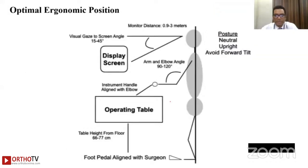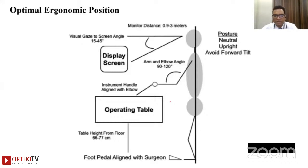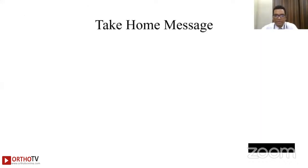Two points about ergonomics during surgery: ensure your posture is straight. For endoscopic surgeries, the screen should be around 3 meters away at 15 to 45 degrees angle. When using a microscope, keep your head straight and avoid bending. The elbow angle should be around 90 to 120 degrees while operating. The operating table — and therefore patient position — should be at the level of the surgeon's umbilicus, with a recommended table height of approximately 66 to 77 centimeters. A footstool can be used to change leg position during surgery.